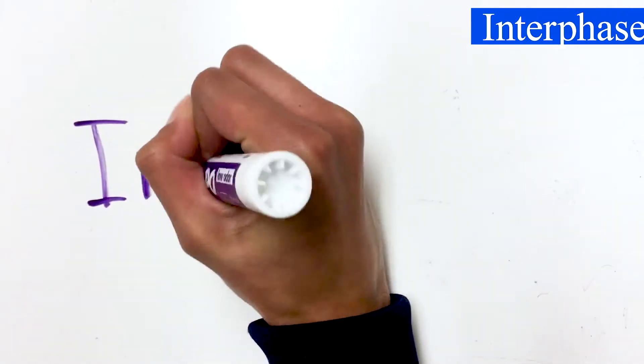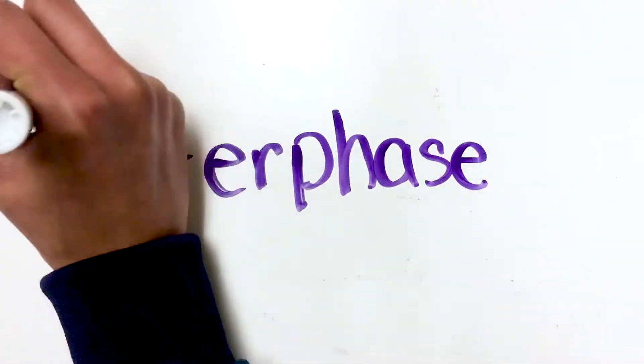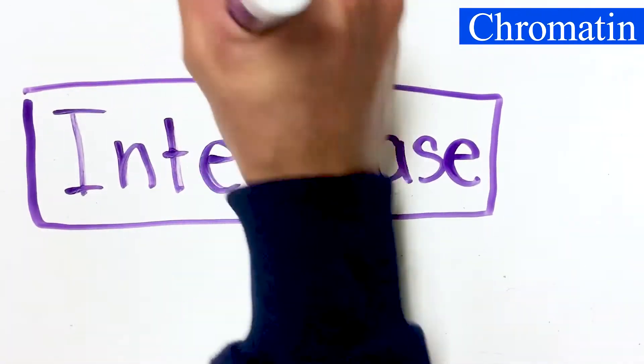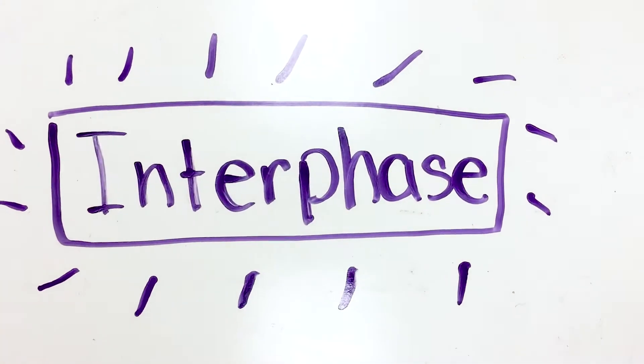First, the cells go through interphase. Interphase is the longest phase of the cell cycle. In the beginning of interphase, DNA exists in chromatins in the nucleus. Chromatins consist of DNA and proteins called histones.